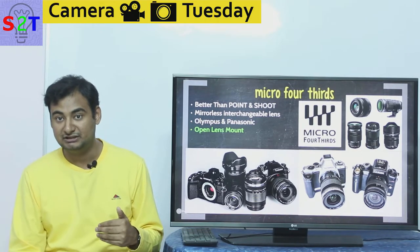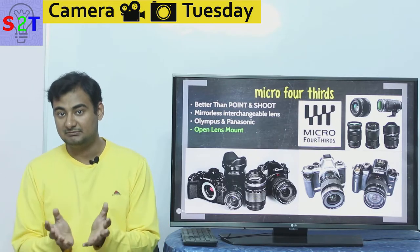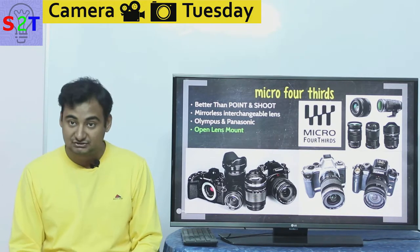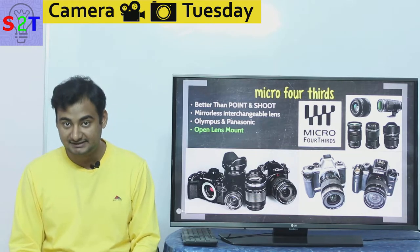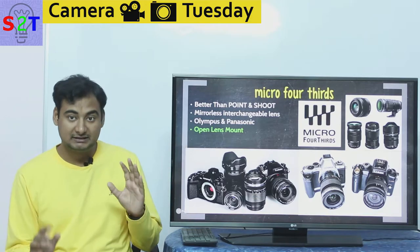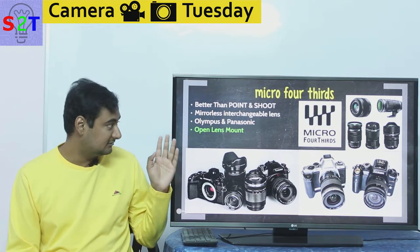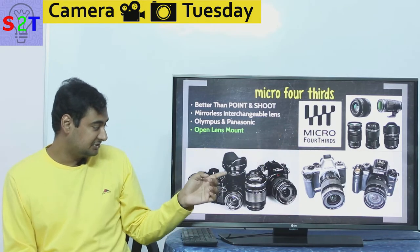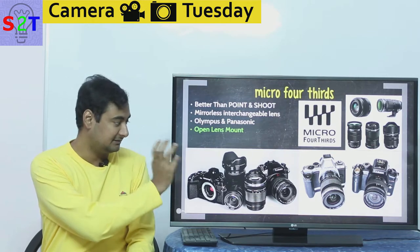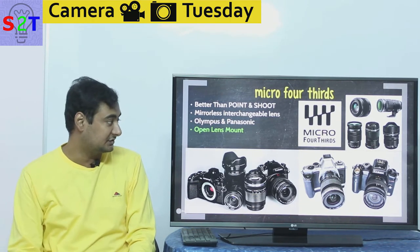The idea was: even if Panasonic makes three or four lenses and Olympus makes five or six lenses, because they are interchangeable, people will have a much larger lens collection — and that is crucial for any interchangeable lens system. To solve this lens problem, they created an open lens mount, meaning Micro Four Thirds lenses are interchangeable between Olympus and Panasonic bodies.